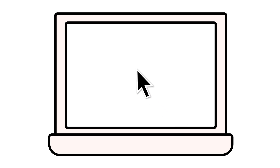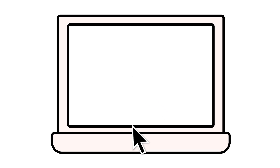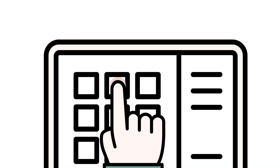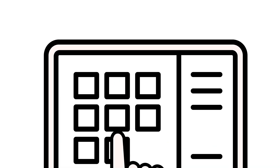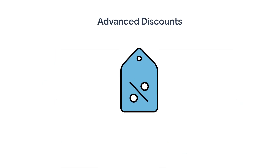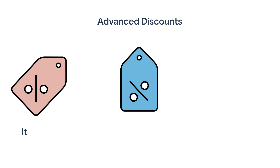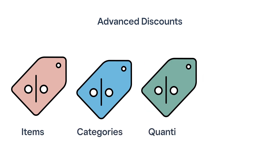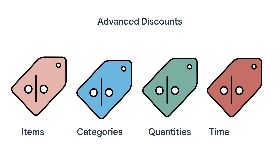Set up and manage discounts quickly and easily from your online Square dashboard or the Square app. You can manually apply your discounts during the checkout flow, or create advanced settings to automatically trigger discounts for specific items, categories, quantities, or timeframes.